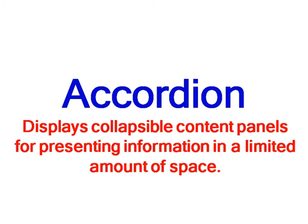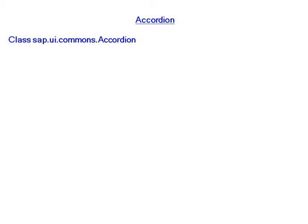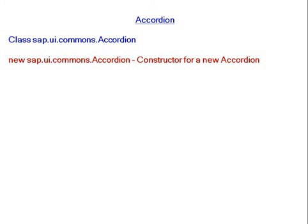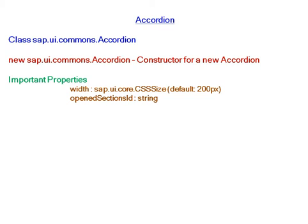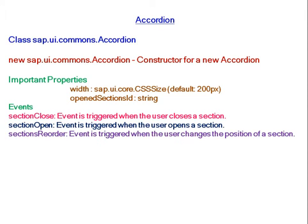SAP UI5 Accordion displays collapsible content panels for presenting information in a limited amount of space. It belongs to class sap.ui.commons.Accordion. For creating a new accordion, the constructor is new sap.ui.commons.Accordion. Important properties are width and openSections ID.